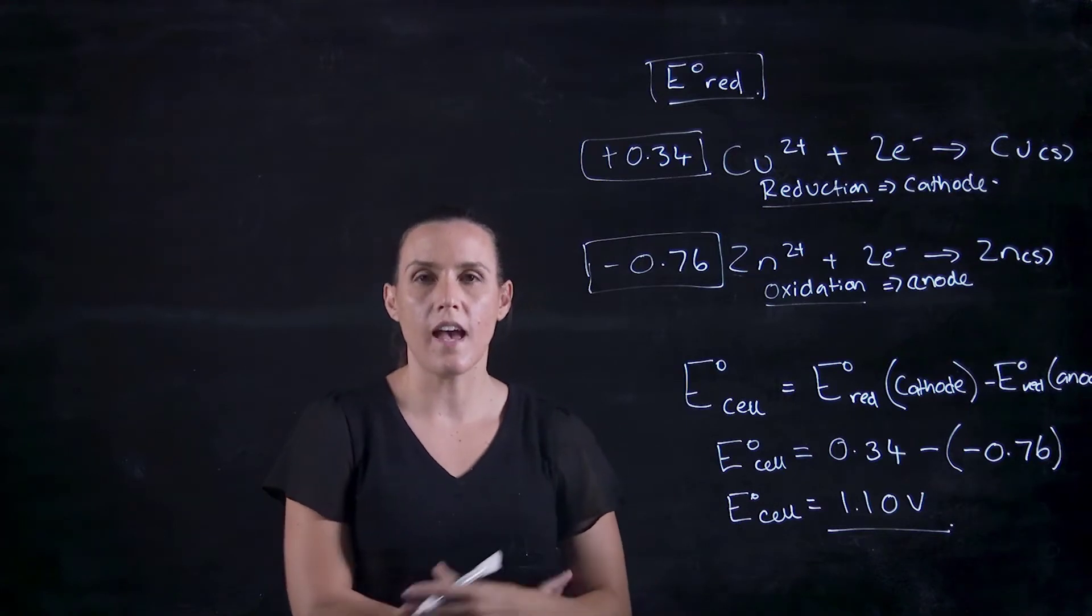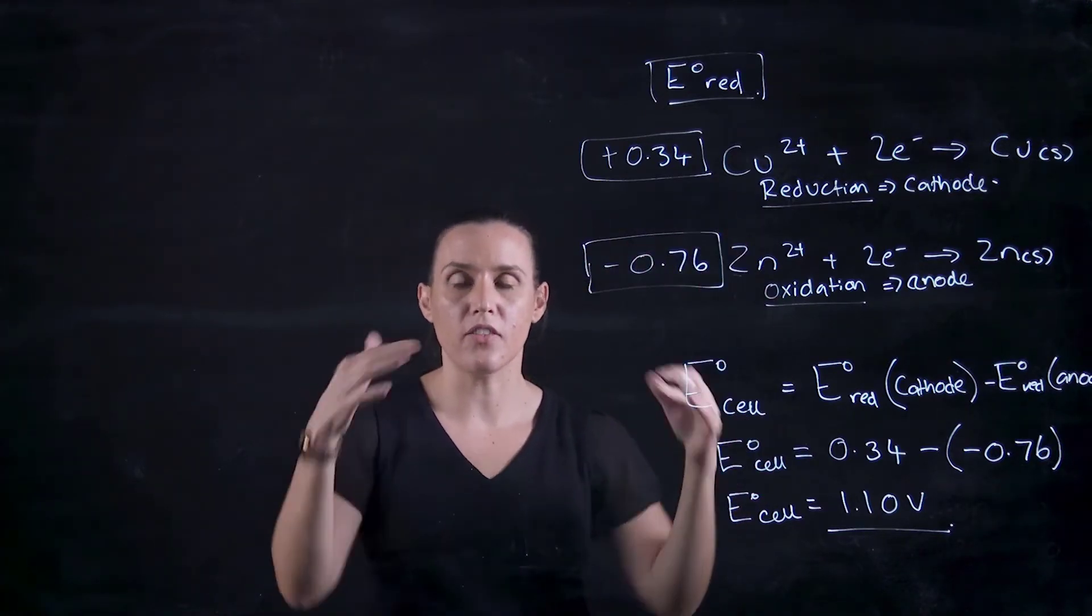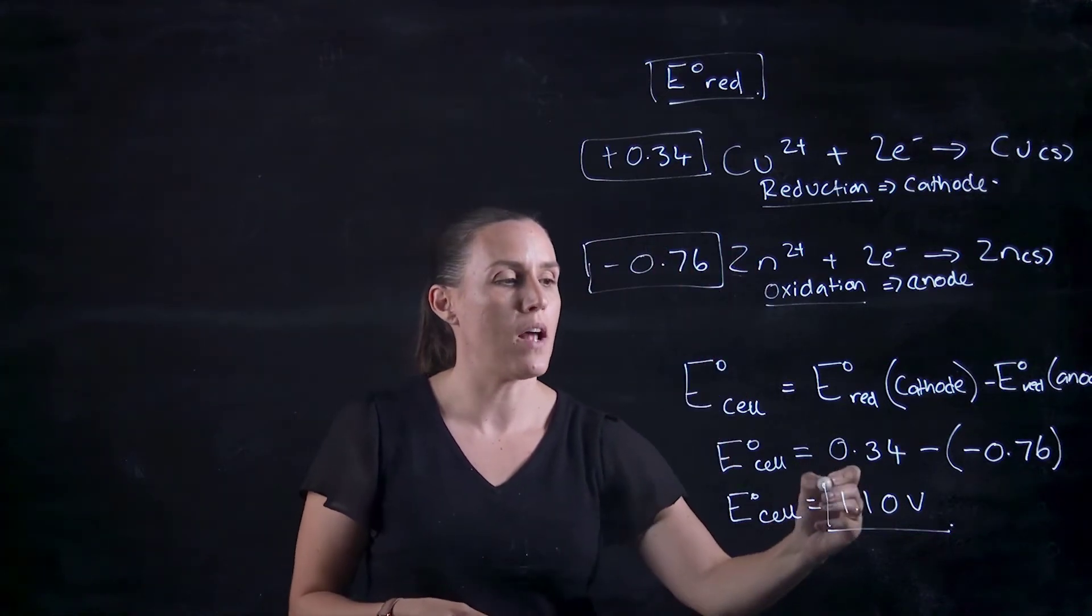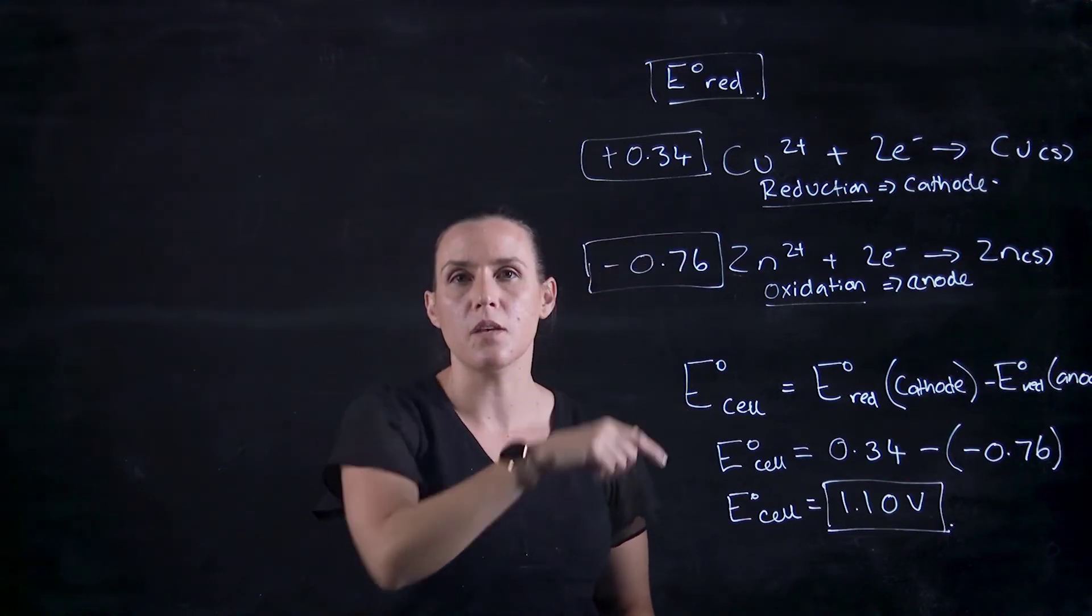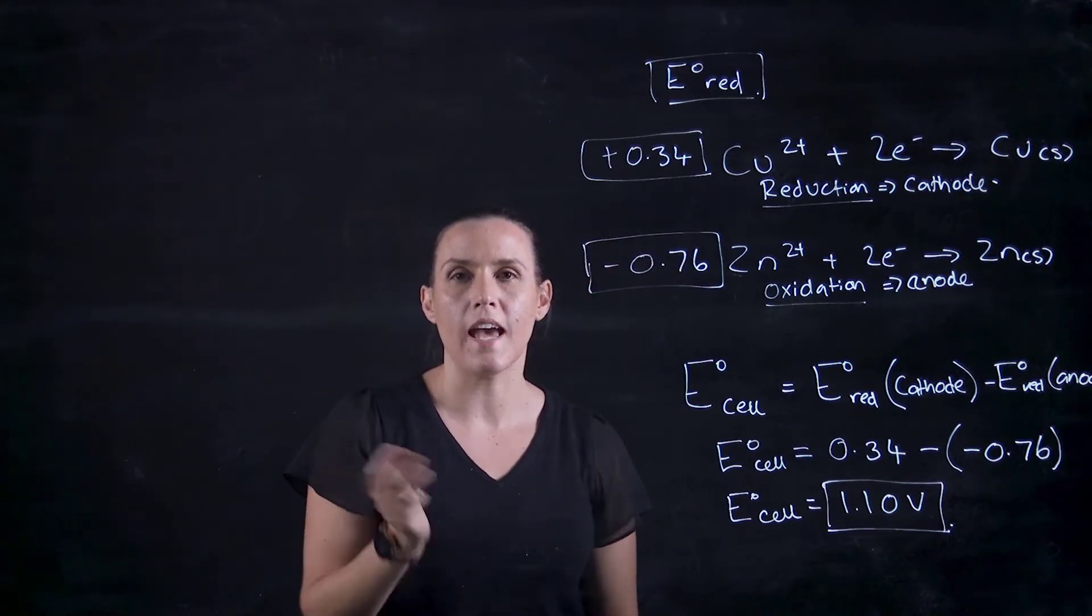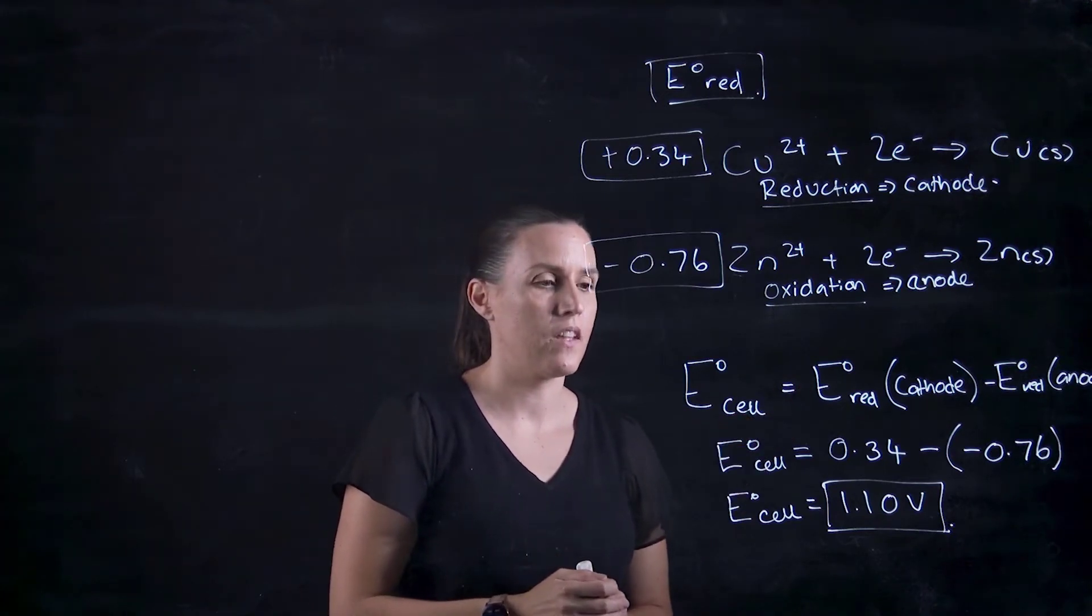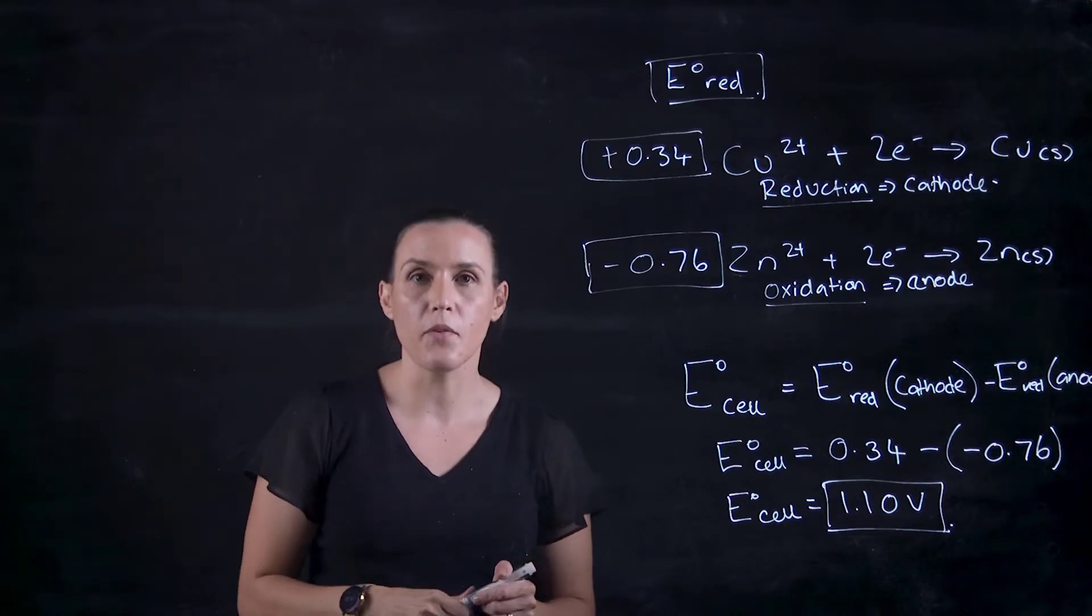If we were drawing out our diagram showing the anode, the cathode, the flow of those electrons, the salt bridge, we can put that 1.1 volts right up at the top where the electrons are being transferred between the anode to the cathode. So we might try another example.